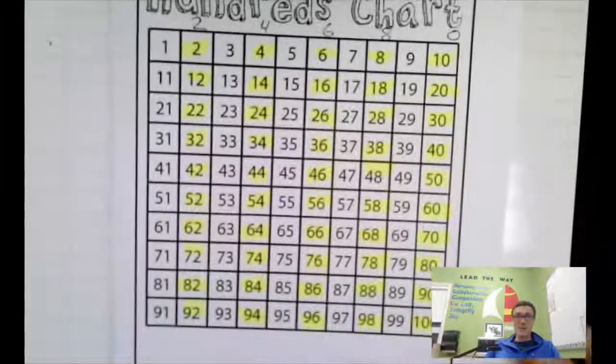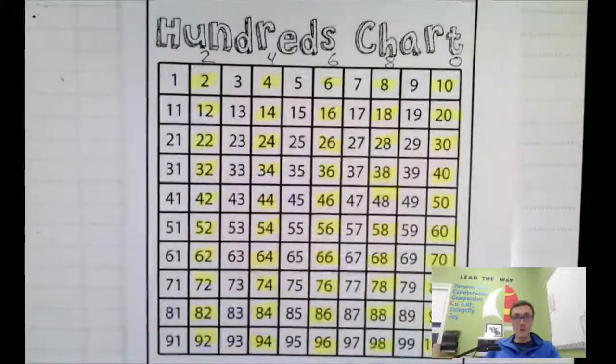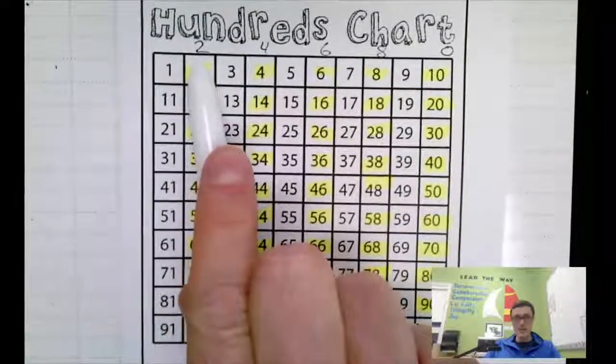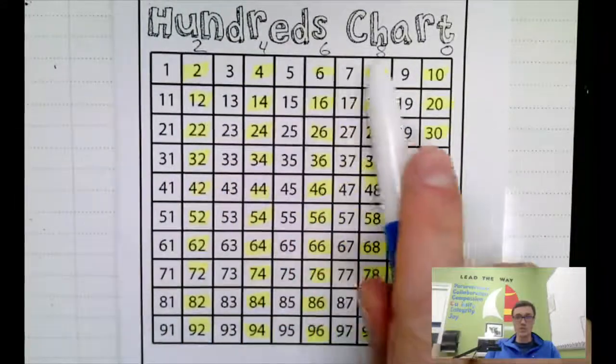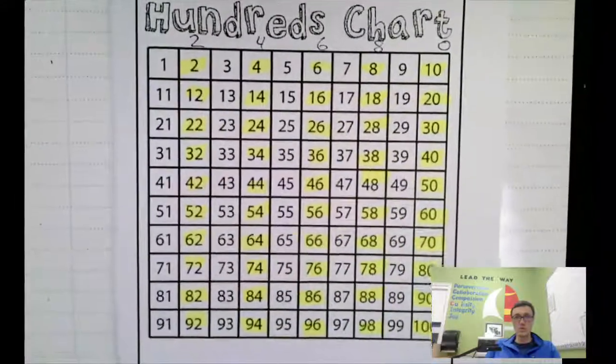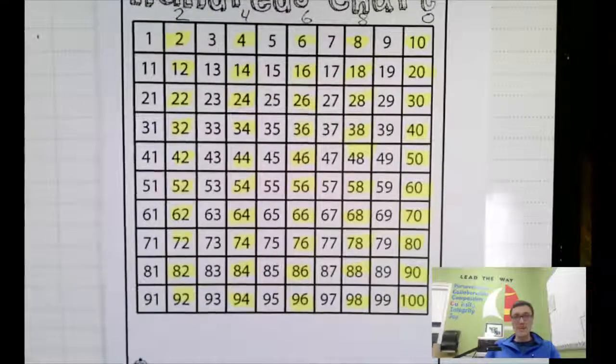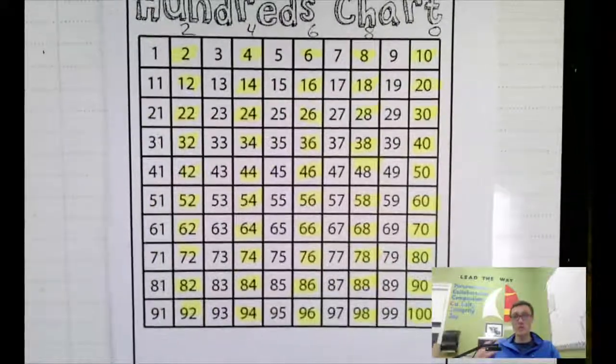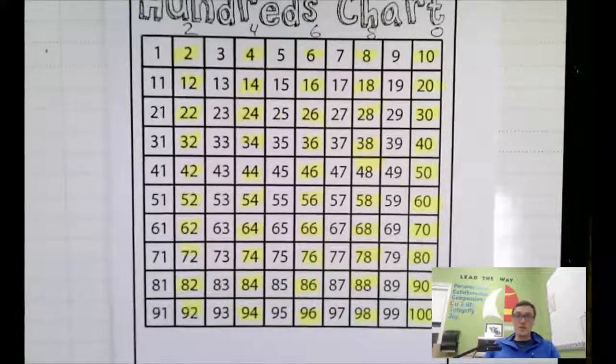Blast off. Good job. Counting by twos. We noticed before that they always end in two or four or six or eight or zero. Let's go up and then down. Say it with me. That's how you're going to do the most learning.